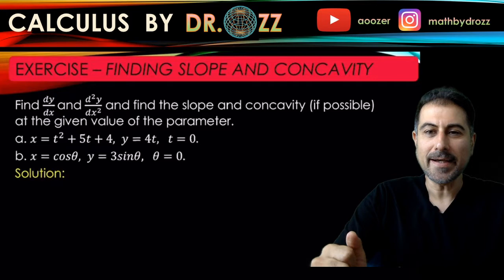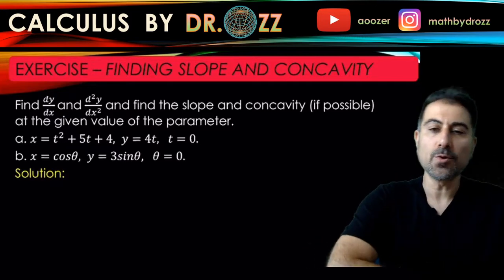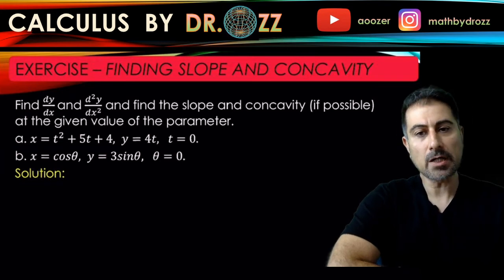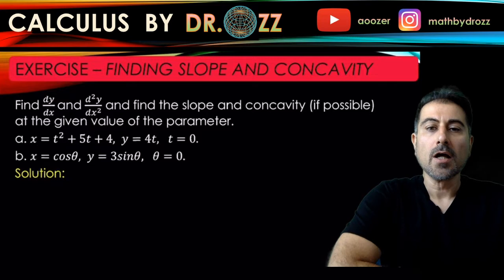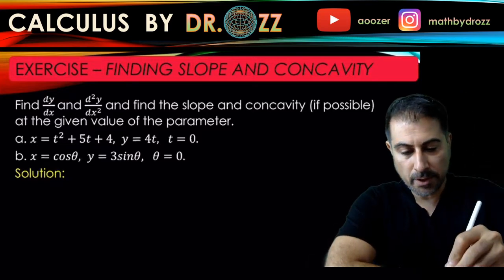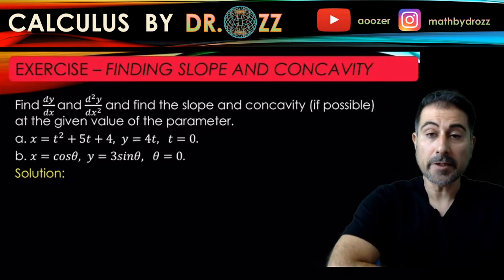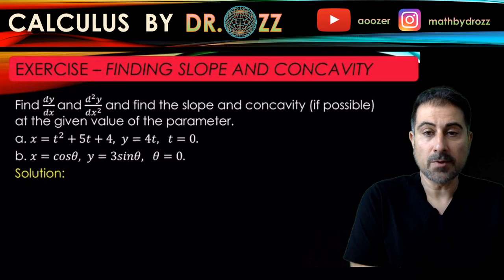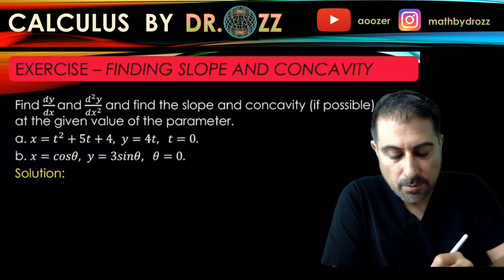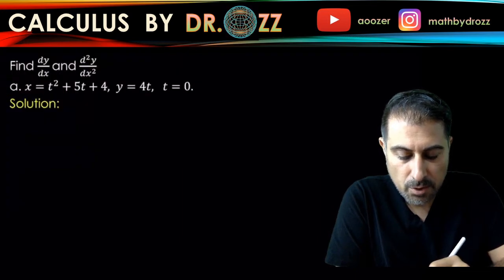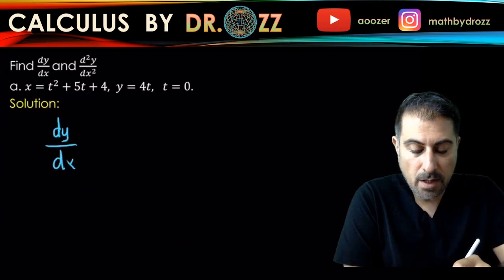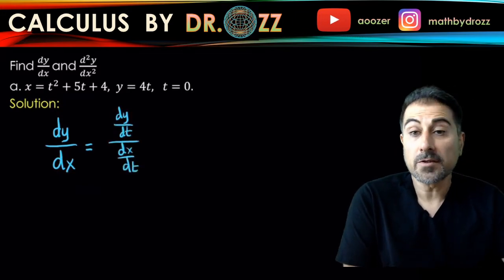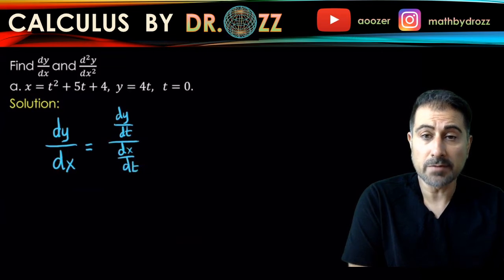Let's start part a. We have x equals t squared plus 5t plus 4 and y equals 4t. And we're looking for dy over dx, the first derivative of the function, and d squared y over dx squared, the second derivative of the function with respect to x, obviously. But the equations provided to us here are both parametric. So we have to rely on the formula for finding the derivatives when the equations are parametrized.